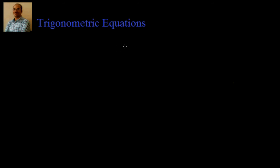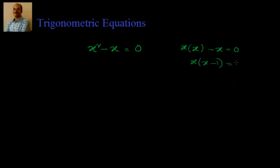Before going ahead with the trigonometric equations, we are aware of the algebraic equation. Suppose we have x² - x = 0. Whenever we are given this type of equation, we try to solve for the value of x which will make this equation true. We take x common: x(x - 1) = 0, therefore x = 0 or x = 1. This is what we know from childhood.